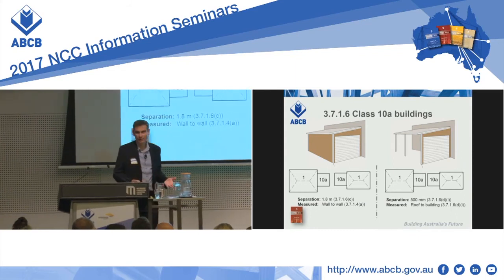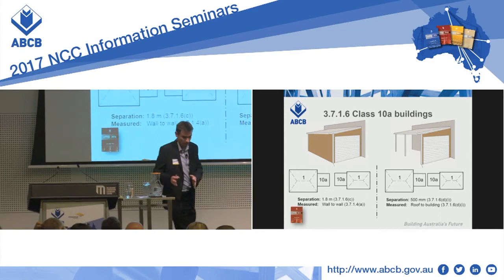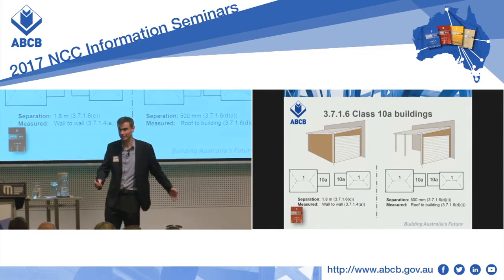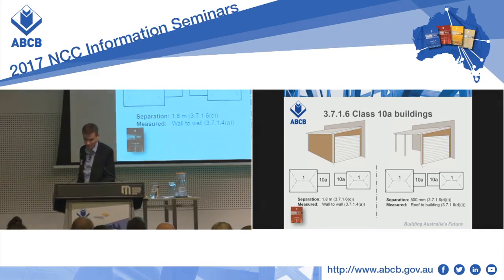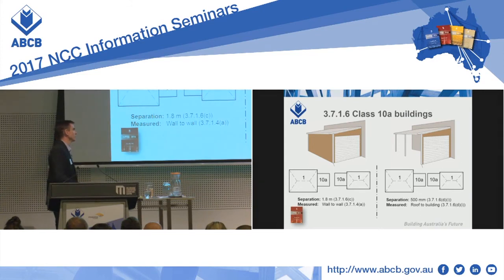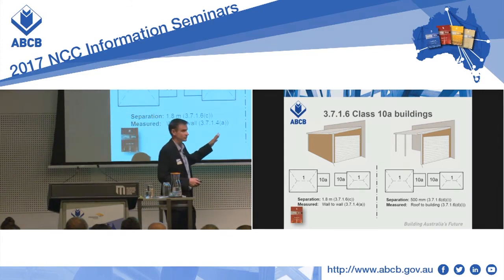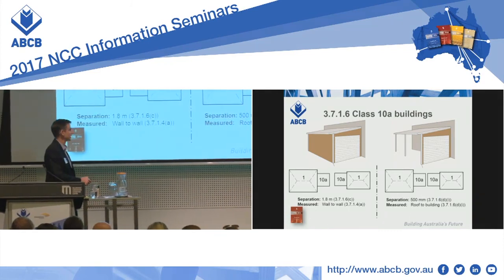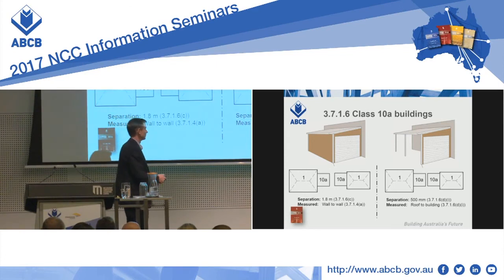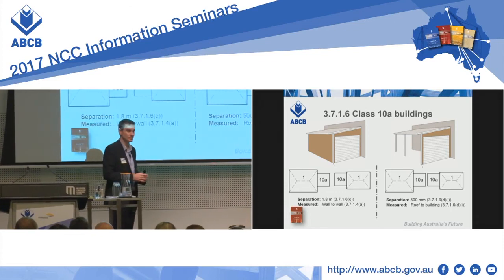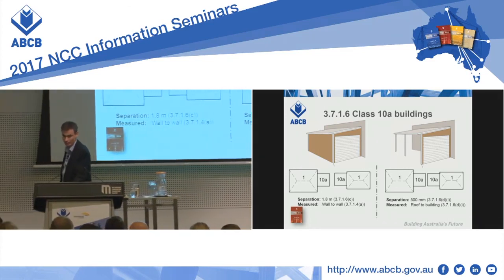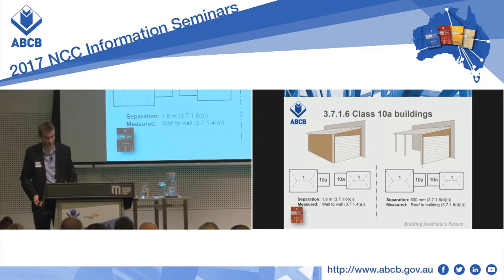An important thing to note when applying the open carport concession is that it doesn't double up. We're used to: my house, neighbour's house — I've got my 900, he's got his 900, we've got our 1.8. When you put buildings on the same allotment, we double up to get 1.8. The open carport concession doesn't double up. When I consider one carport, I simply have to have the closest part of the roof to the closest part of the adjacent building not less than 500 millimetres away. When I consider the adjacent carport, the same applies independently — all in accordance with 3.7.1.6D. The 500 millimetres doesn't double up. It all comes down to getting your head out of 3.7.1.4 and applying the rule in 3.7.1.6D.